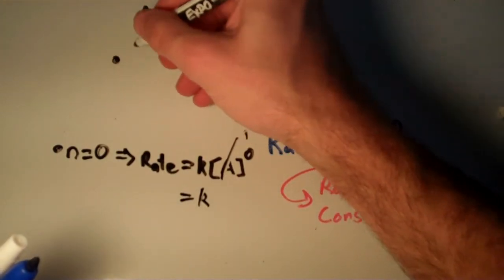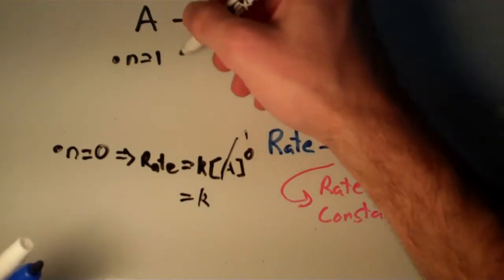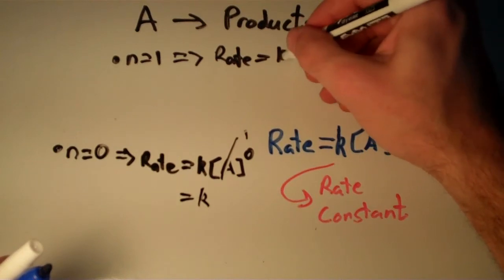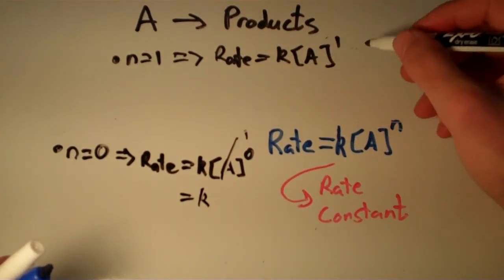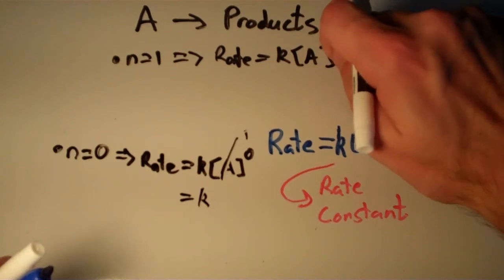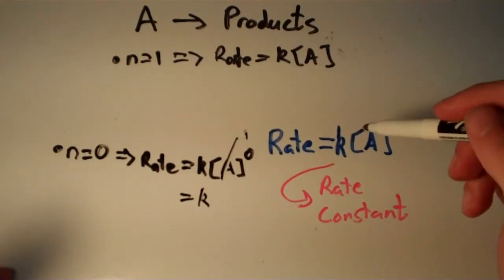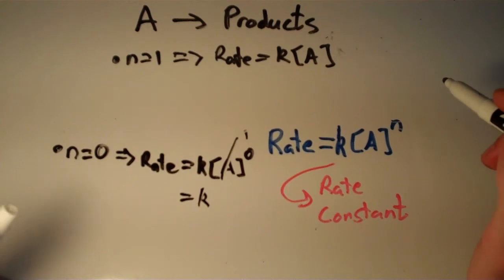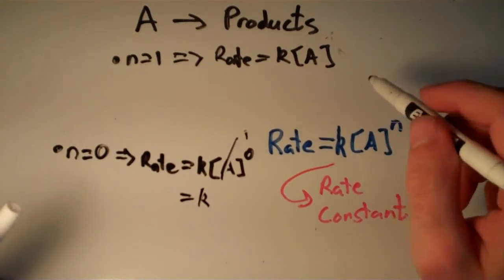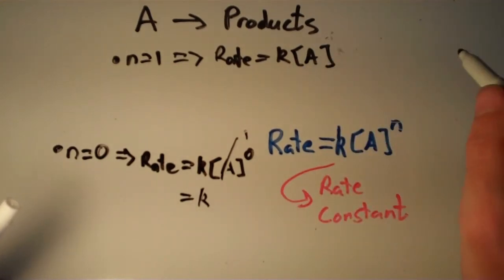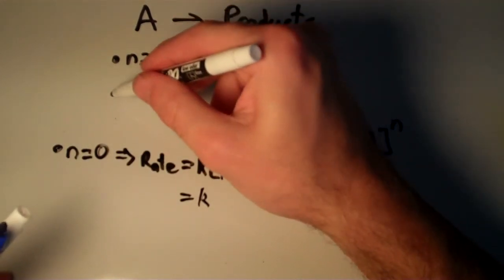If n equals one, the rate is equal to K times the concentration of A to the first power, or simply K times the concentration of A. That means the rate of the reaction is directly proportional to the concentration of A — the more concentrated the reactant, the faster the rate.